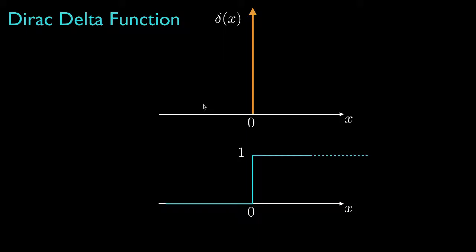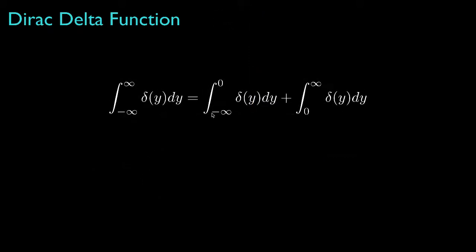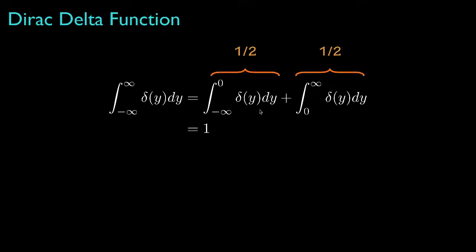Its cumulative distribution function is the unit step function, but it's important to think about what happens at the discontinuity when x is equal to 0. To examine that, let's break the integral from negative infinity to infinity into two integrals — one from negative infinity to 0 and another from 0 to infinity. Because the total integral must be equal to 1, the sum of these two partial integrals must also equal 1. One possible way is to assign both the left tail and right tail integrals a value of 1 half. Another way is to assign a value of 1 to the right tail integral and a value of 0 to the left tail integral.